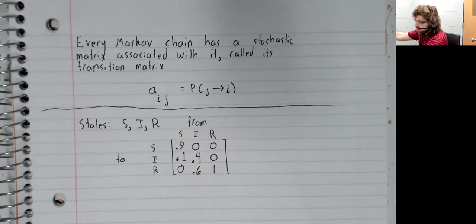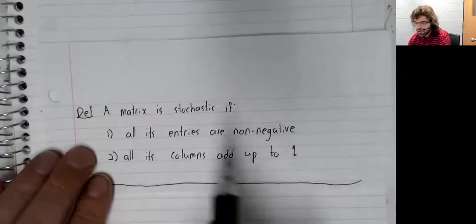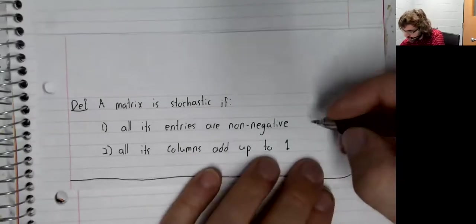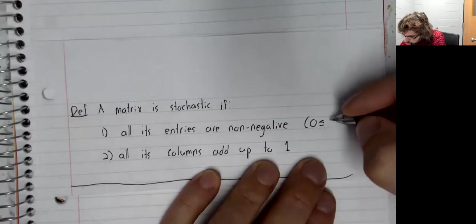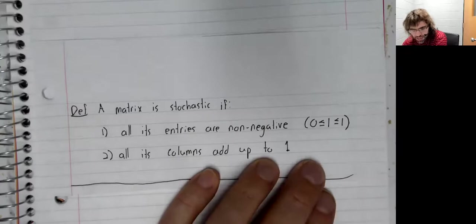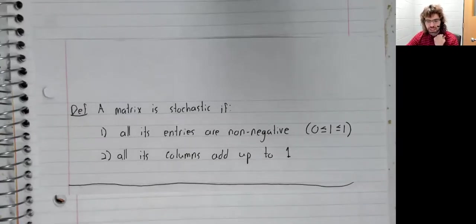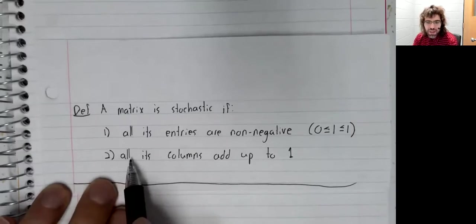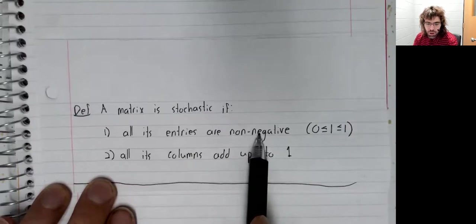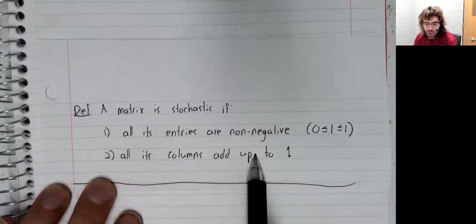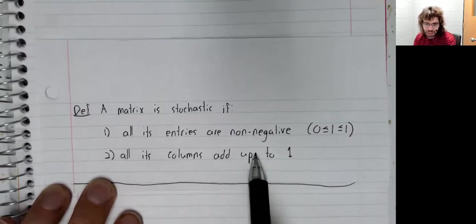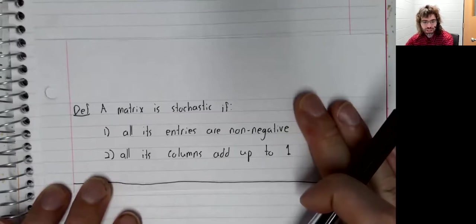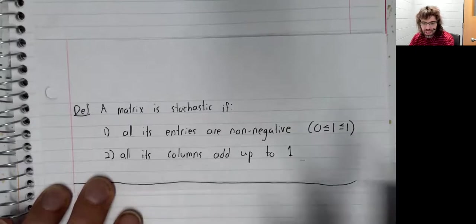You can see why all of the entries are non-negative. This definition wasn't quite right - all the entries have to be between zero and one. Although I guess condition two gives me that automatically. If they're all non-negative and they add up to one, then none of them can be greater than one. So I was right the first time, we don't need that as a separate condition.